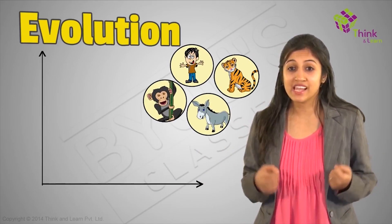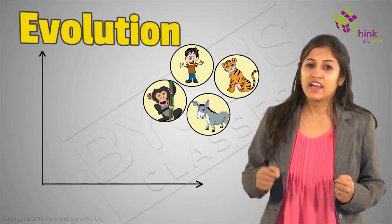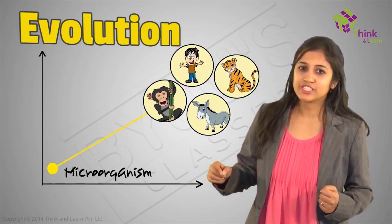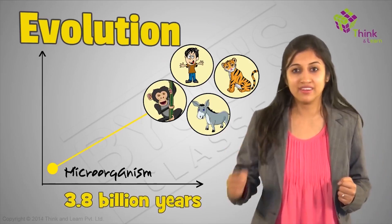every single thing that is alive today, can claim the same share of heritage having descended from the same microorganism in a relationship that can be traced back to 3.8 billion years.